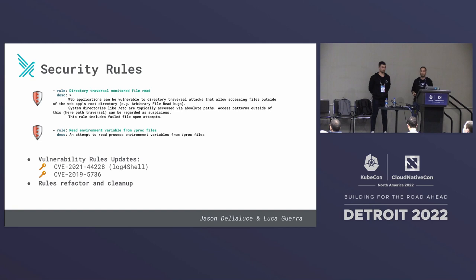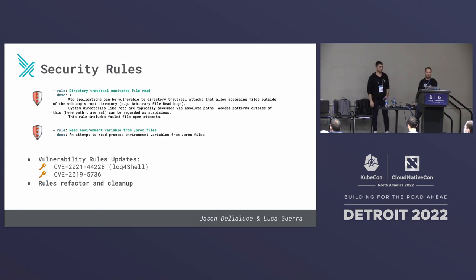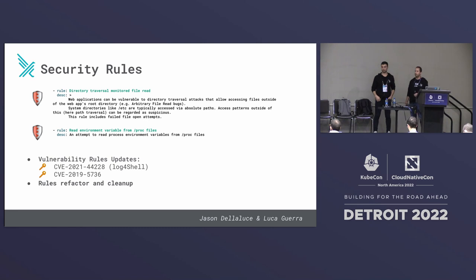As a security person myself, I really like seeing new security rules added to the defaults. I love when a process that opens a file contains too many dots and slashes to be legitimate, and also when a process tries to look at other processes' environment variables that may contain secrets. I am very grateful to the community for these rules, and also very grateful for a cleanup of the rules that got us much better performance for some use cases.